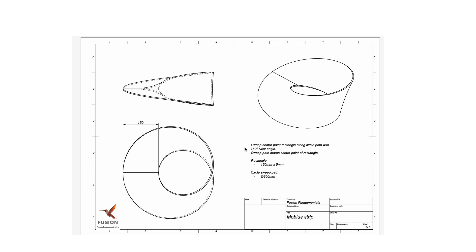There's a 180-degree twist angle, so in essence this is just a basic sweep with a twist angle. Our sweep path is a 300-millimeter circle, and a rectangle for the sweep profile which is 150 millimeters by 5 millimeters. We're going to make sure that our sweep path marks the center point of the rectangle.